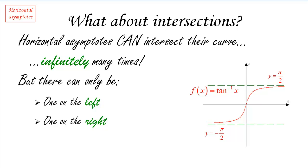And the way to look for these two possible horizontal asymptotes is to look for the limit of the function as x goes to negative infinity on the left and the limit of the function as x goes to positive infinity on the right.